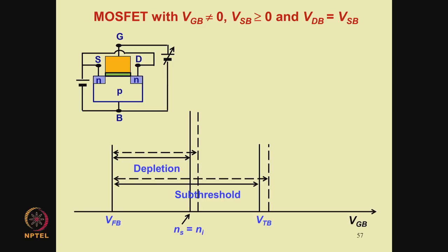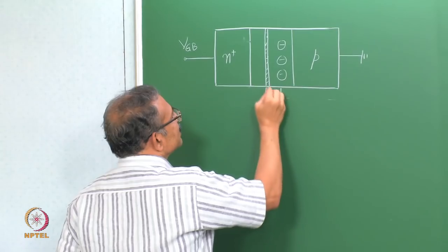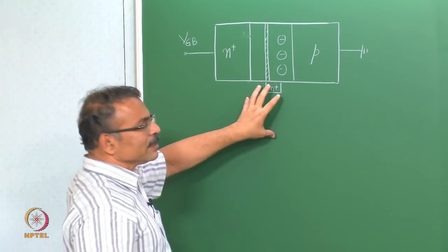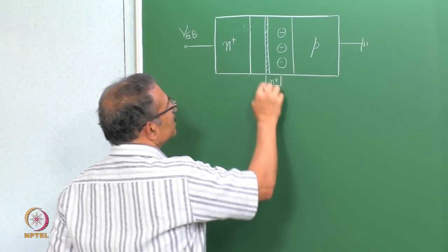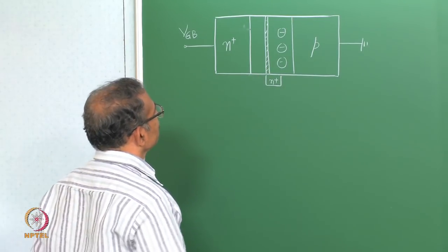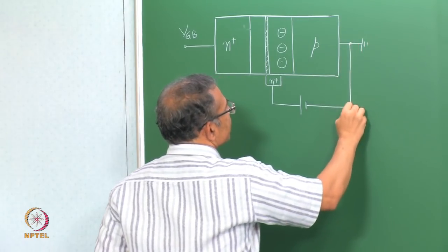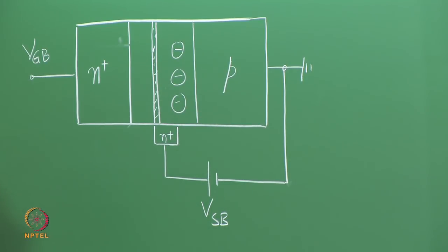We are considering a structure where we have brought an N+ region and contacted it from the side. In practice, the P region would surround the embedded N+ region. We have neglected any depletion region that occurs between N+ and P because the N+ is only making contact to the inversion layer. Now we apply a bias VSB — note that this VSB is reverse biasing the N+-P junction. As remarked earlier, the effect of a high gate-to-bulk voltage above threshold is to induce an N+-P junction, so when you apply VSB, it reverse biases the entire inversion layer-P substrate junction all along.